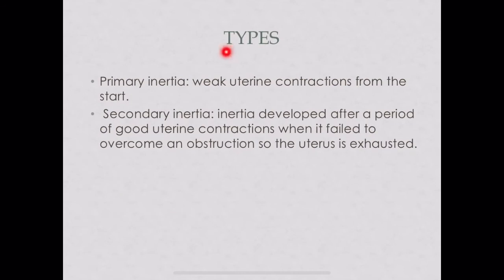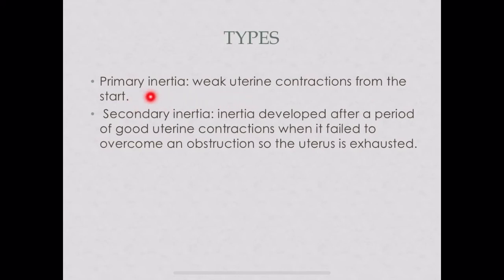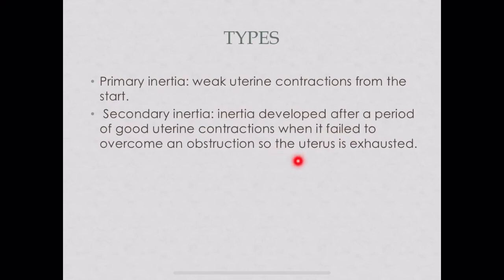Types of hypotonic uterine inertia — also called inert uterus or uterine inertia: primary inertia, where weak uterine contractions are present from the very start of labor; and secondary inertia, where the patient initially has good contractions but labor progress stops subsequently.